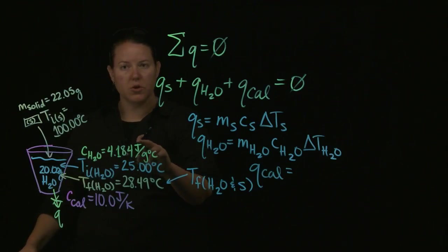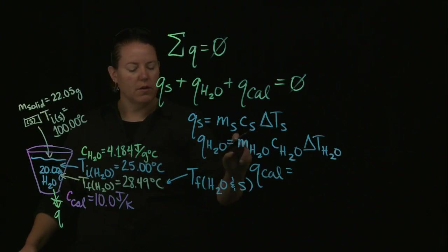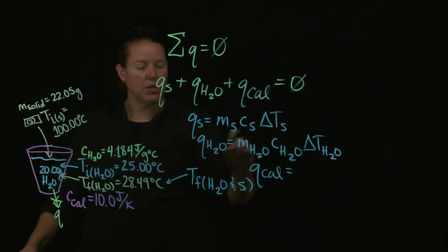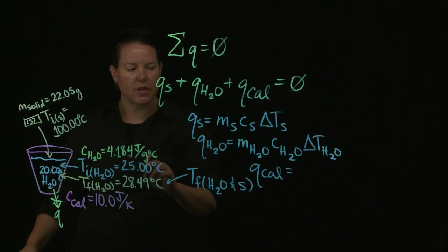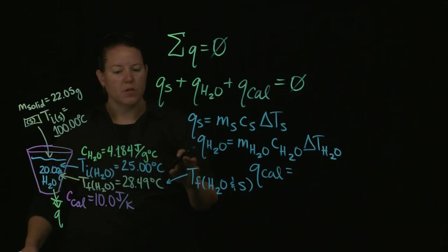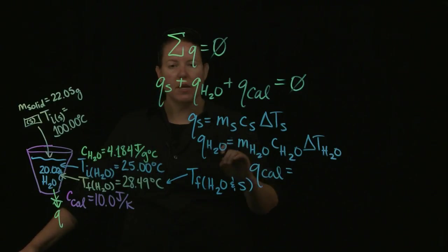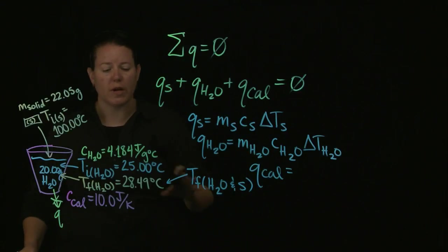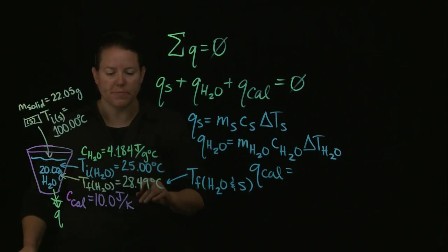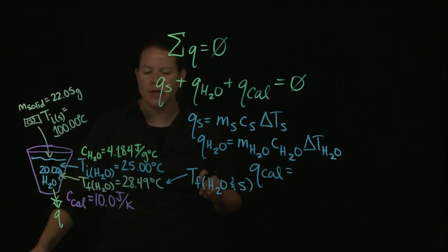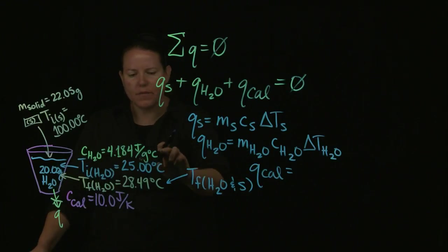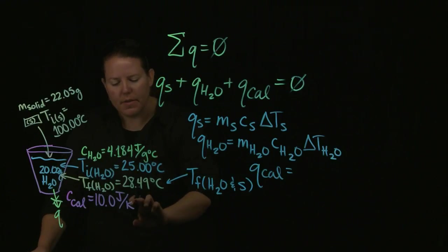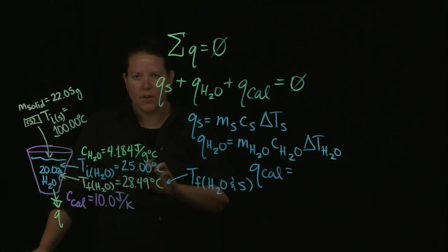Q is in joules, mass is in grams, change in temperature is in degrees Celsius. The specific heat capacity is like a conversion factor — it cancels out all the units I don't want. Notice the difference between the specific heat capacity of the water and the specific heat capacity of the calorimeter.